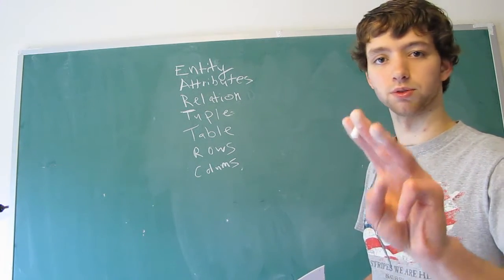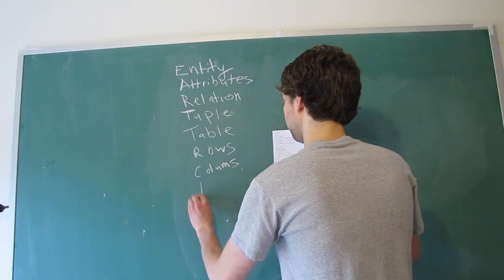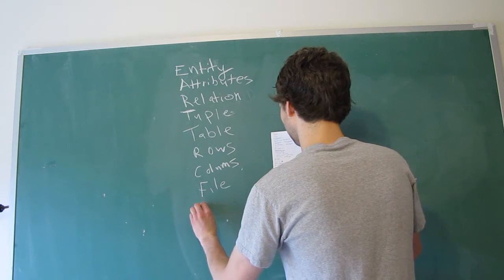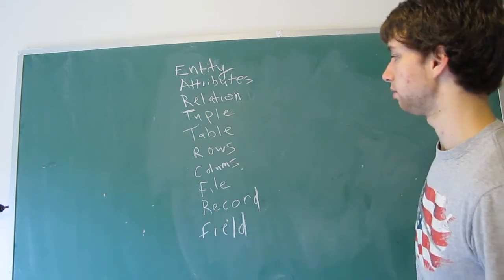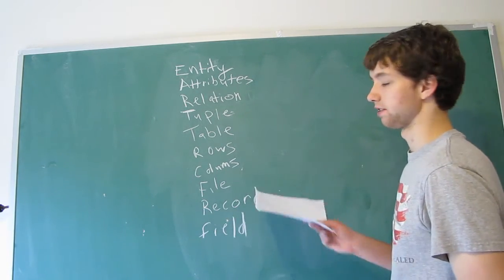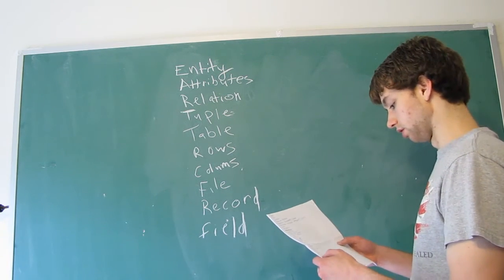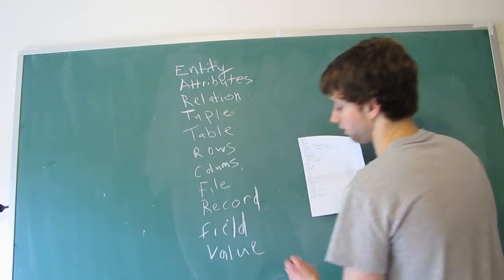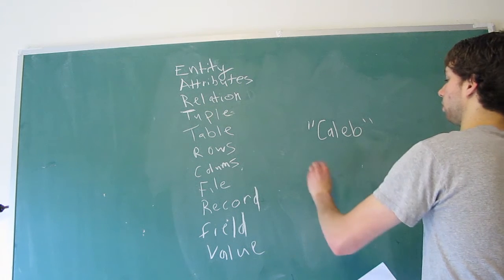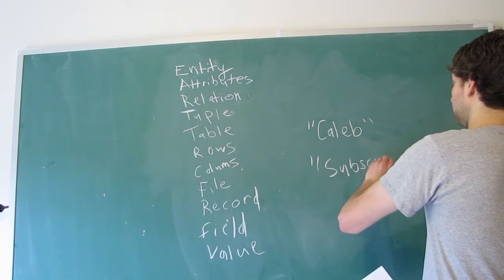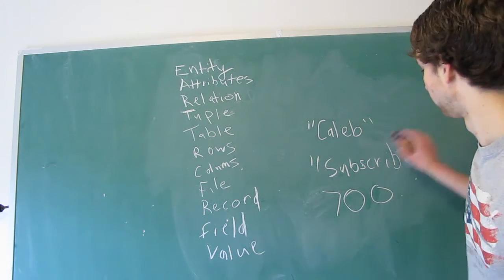Now we also have another three more terms that we haven't learned yet, which you will possibly hear. They're kind of older terms, but they're just talking about the same thing. You may hear the terms file, record, and then field. So what are these talking about? Well, file is just another name for a table. A record is another name for a row. And a field is another term for a column. So other than that, we have the words value. A value is the information that we put in to a specific column. So here is a value, Caleb, or subscribe, or 700, or June 16th, whatever it is. Those are all values.